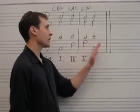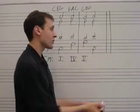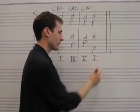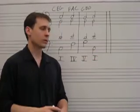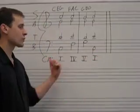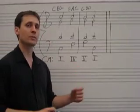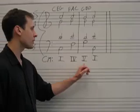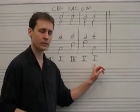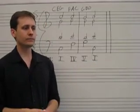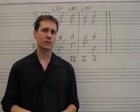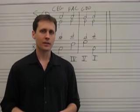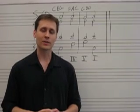So, this is how we use the Roman numerals to help us analyze music. We can describe the chord progression as I, IV, V, I. Do a little practice with this, and then we're going to talk about how inversions can be incorporated into this as well.